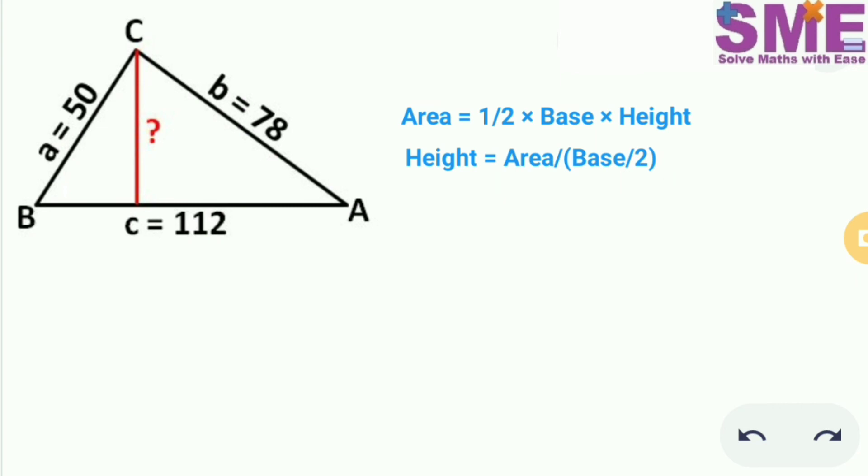So substituting the values we get 1680 divided by half of 112. So we get 1680 divided by 56. So we get the height of this triangle as 30m.